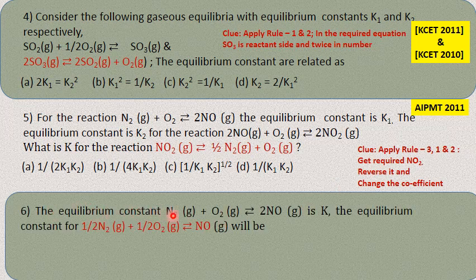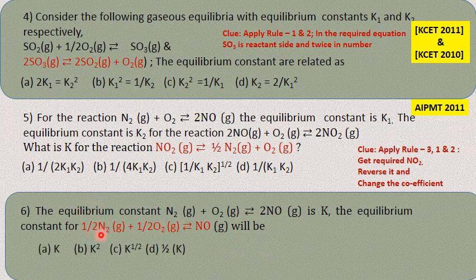Next: the equilibrium constant for N₂ + O₂ ⇌ 2NO is K. Then for ½N₂ + ½O₂ ⇌ NO, what is the equilibrium constant? Here the equation is halved. Find the value of N from the original to the new equation, and accordingly K₂ = K^N. N is the coefficient by which the equation has been scaled, so apply rule 2 to find the answer.